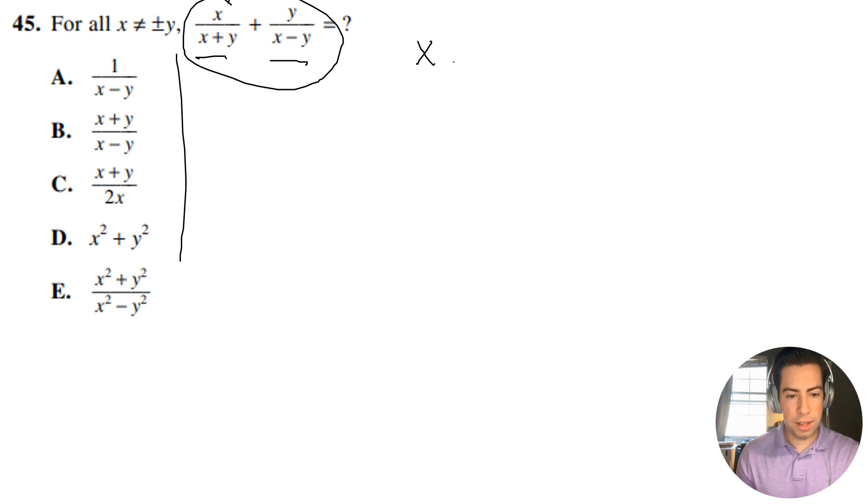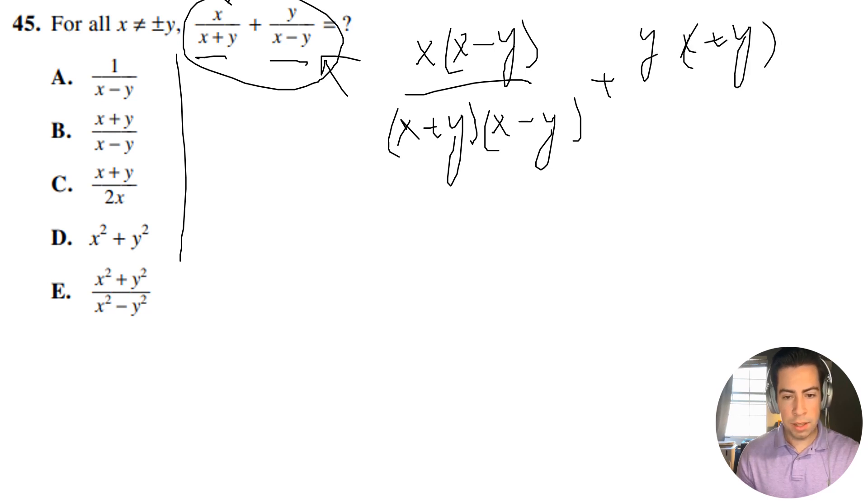So we're going to need to multiply the top by x minus y and the bottom by x minus y. So I'm going to have x plus y multiplied by x minus y. And then I'm going to have to do the opposite for this term right here. So it's going to be y times x plus y. And then x minus y multiplied by x plus y.